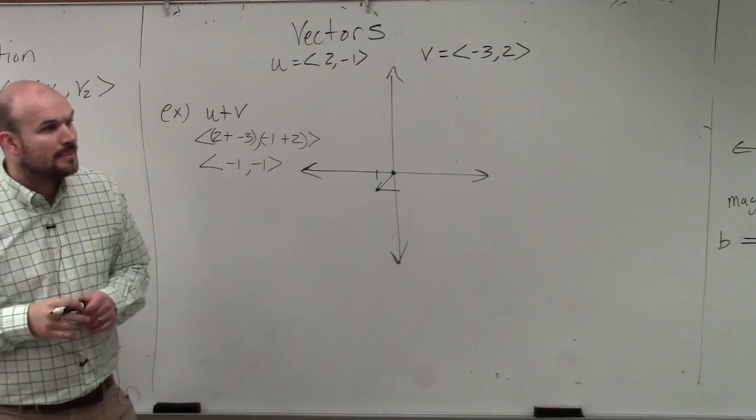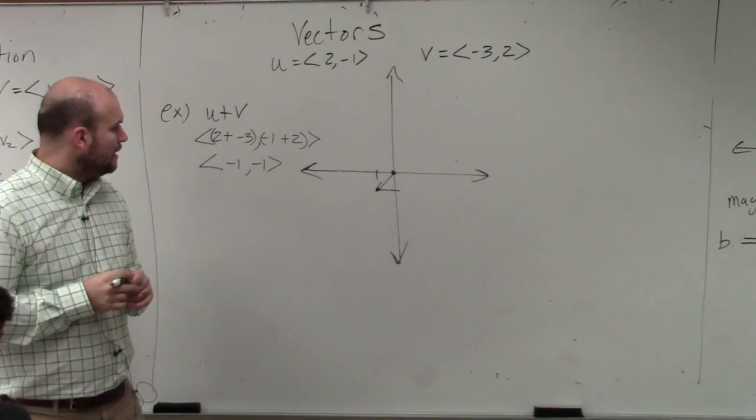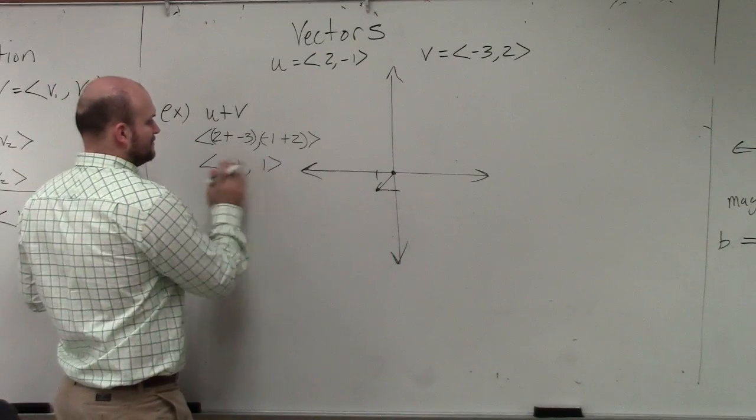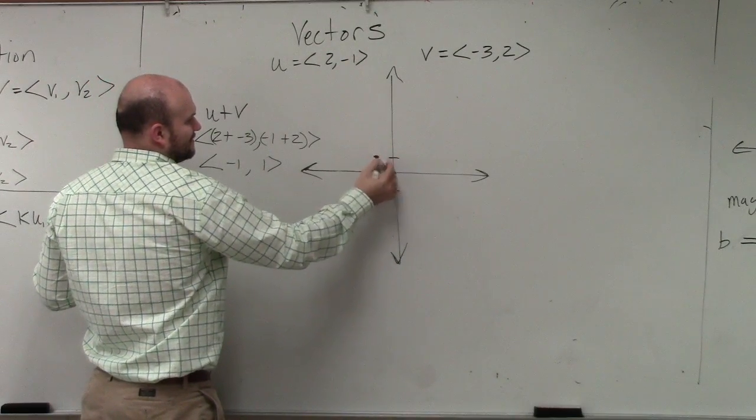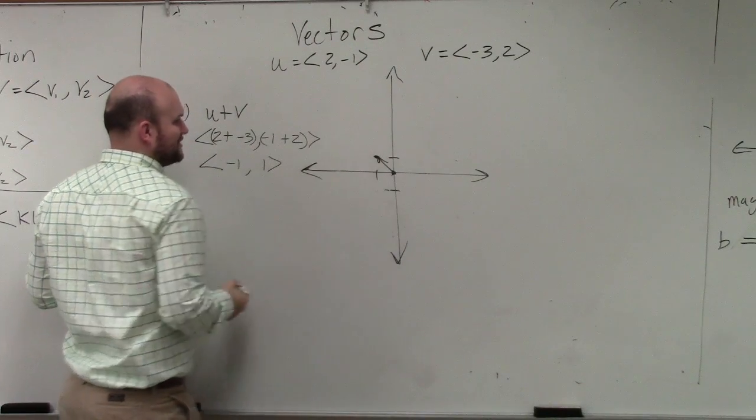How does negative 1 plus 2 be negative 1? It should be positive 1, right? Negative 1, positive 1. That is your vector u plus v.